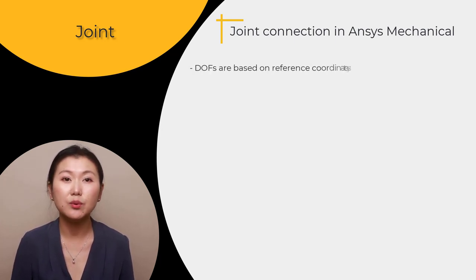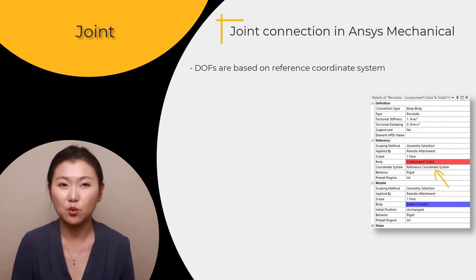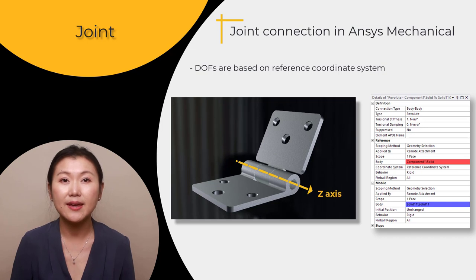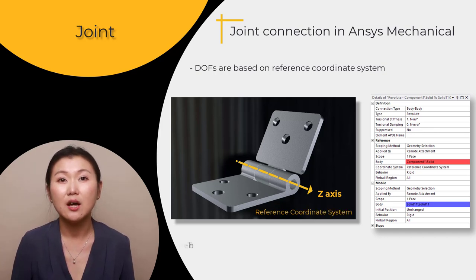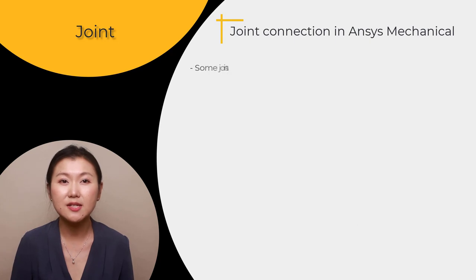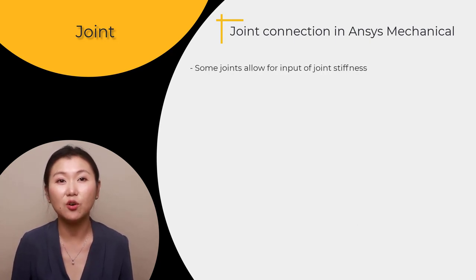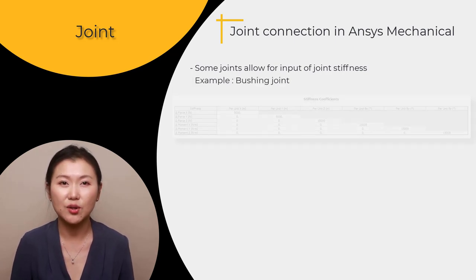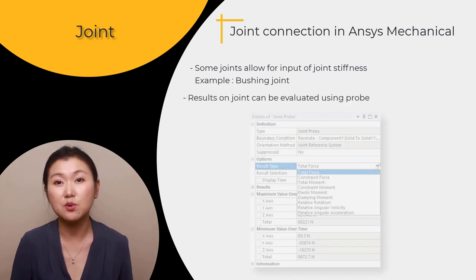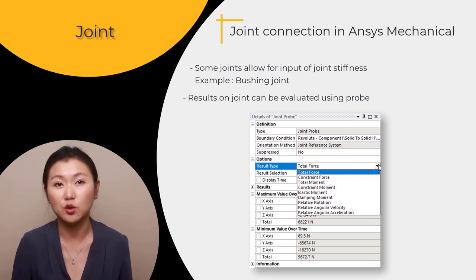When we talk about degrees of freedom of joints, they are based on the reference coordinate system. For example, for the revolute joint, when we say the rotational degree of freedom along the z-axis is free, that z-axis is not the global z-axis but the z-axis in the reference coordinate system. By default, the remote point of the reference side is located at the origin of the reference coordinate system. When defining joints, besides choosing the reference and mobile side, some types of joints may allow input of joint stiffness — for example, the bushing joint allows users to input a stiffness matrix for different directions independently. Besides stiffness, there are also additional features for dynamic or nonlinear analysis. ANSYS Mechanical can report the forces experienced in the joints, along with the relative displacement or relative rotations of the joint.